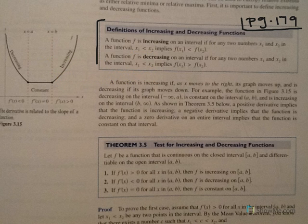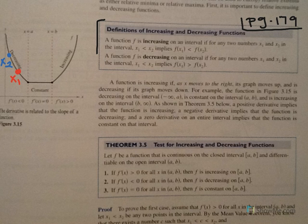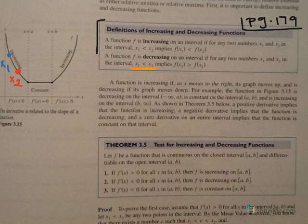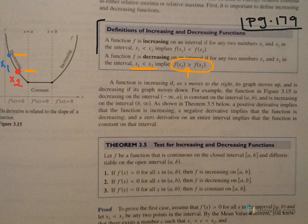Now let's look at what decreasing means. I'll pick two points over here. x1 is going to be here and x2 is going to be here, because the first premise requires x1 < x2. Actually, I had that backwards — let me fix that. This is x1 and this is x2. The inequality looks a little different: f(x1) is greater than f(x2). Is the y-value at x1 greater than the y-value at x2? Yes — so that is a decreasing function.